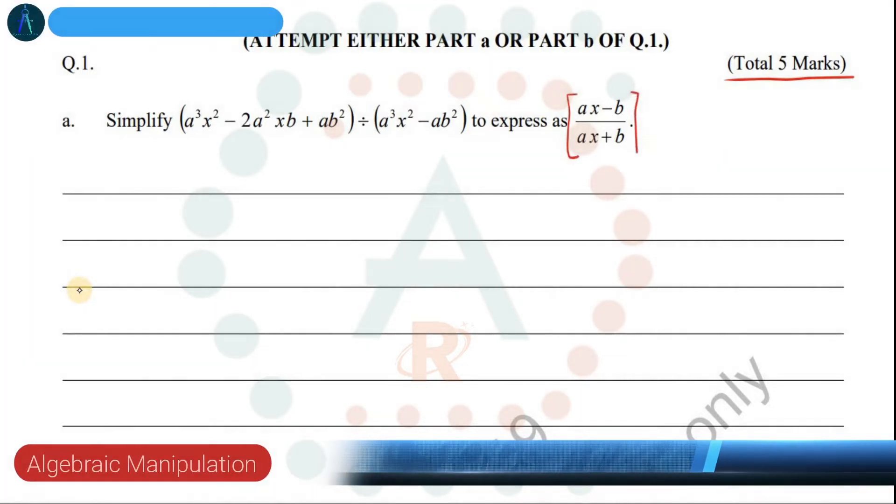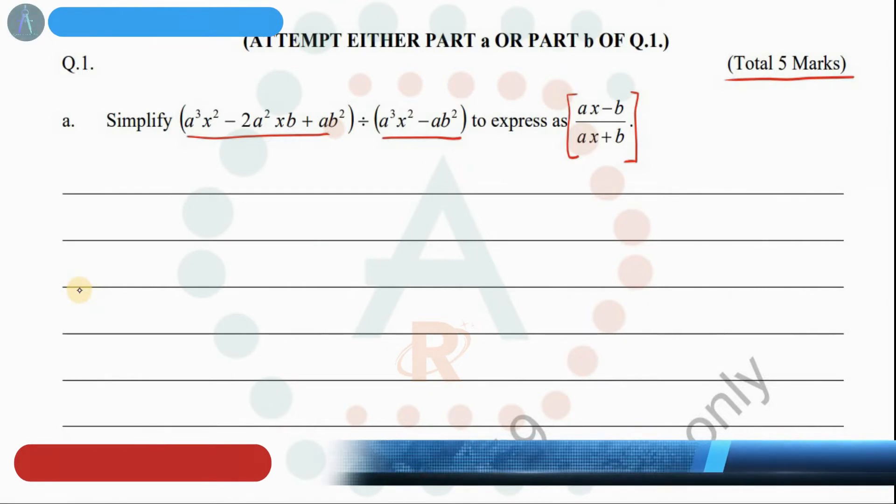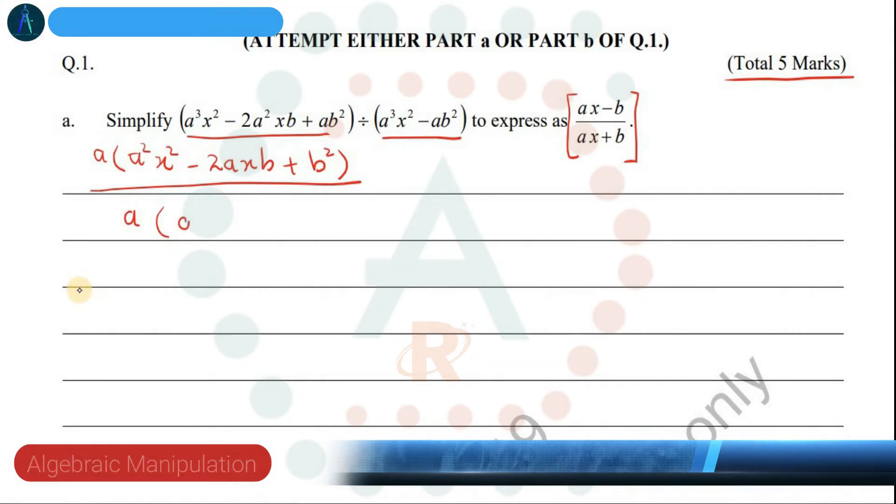Here we have a numerator and here we have a denominator. In the numerator we have a common factor: a²x² - 2axb + b². After taking out the common factor, the remaining bracket will have a²x² - b².